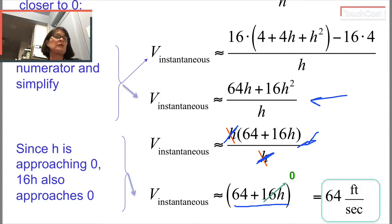So 64 plus 16h, as h goes towards 0, 16h is going to go towards 0. That's going to cancel out and leave me the 64 feet per second that my calculator estimated before. But now I have an algebra answer.